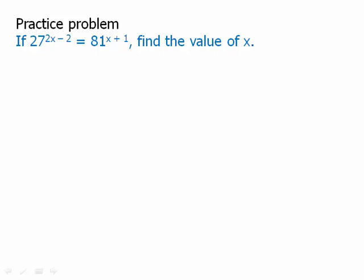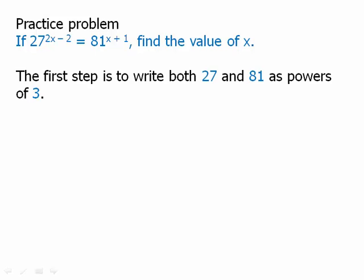Here's a practice problem along these lines. So this now is a problem as it might appear on the test. Pause the video, and then we'll talk about this. Okay, well, 27 and 81, we can't write 27 as a power of 81 or 81 as a power of 27. The first step is to recognize that both 27 and 81 are powers of 3, and we can rewrite them as powers of 3.